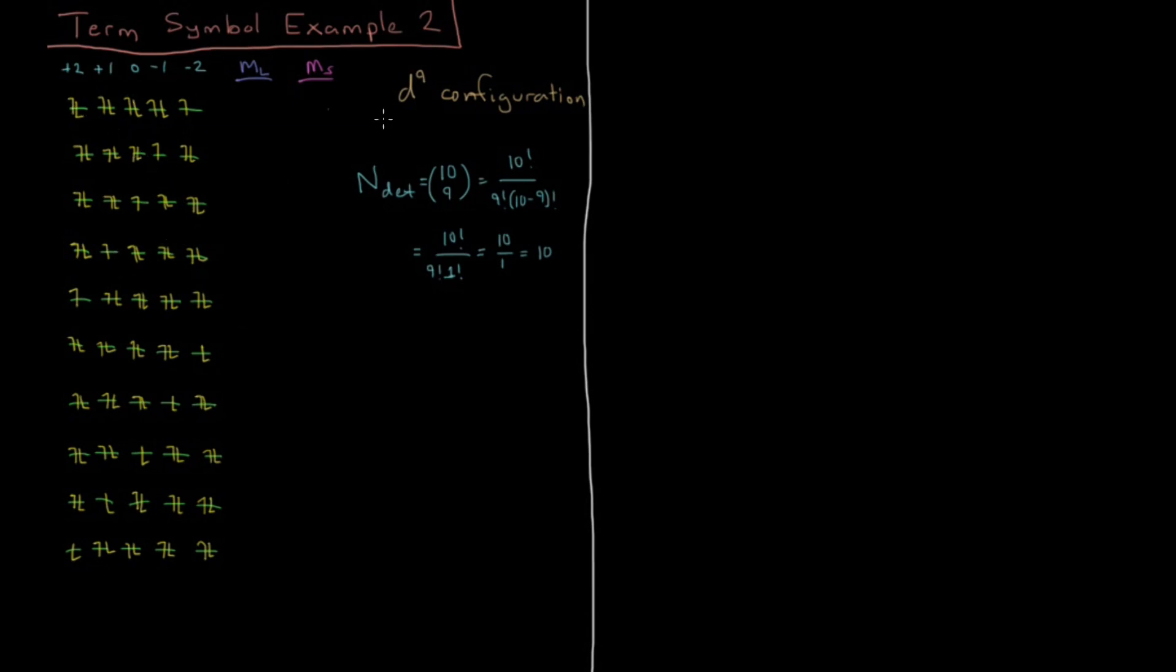We've figured out there are 10 different determinants or configurations, and I drew all 10 here. The next step is to figure out the values of M_L and M_S for each of these 10 configurations. The individual D orbitals have M_L values ranging from plus 2 to minus 2.